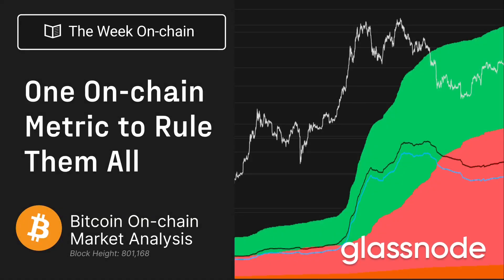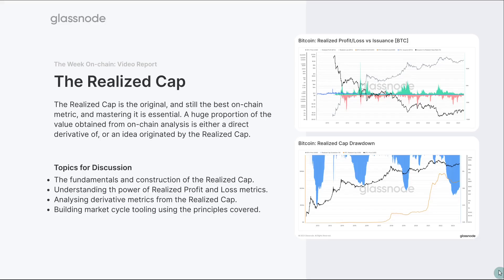Hello everyone and welcome to your Glassnode video report for week 31, 2023. Last week we were looking at whales — some pretty heavy on-chain analytics, very nuanced and new tools. Today we're going to pare it back and look at what I think is the most important metric in all of on-chain analytics: the realized cap. This may sound fundamental, but I guarantee you don't know how far this rabbit hole goes. So much value in the on-chain space is either a direct derivative of or an idea that comes from the realized cap — it is one of the most powerful tools in the entire discipline.